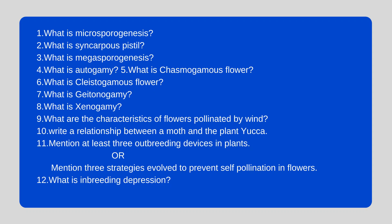We start from the chapter Reproduction in Flowering Plants. What is microsporogenesis? What is syncarpous pistil? What is megasporogenesis? What is autogamy? What is a chasmogamous flower? What is a cleistogamous flower? What is geitonogamy? What is xenogamy? What are the characteristics of flowers pollinated by wind? Write the relationship between a moth and the plant Yucca.